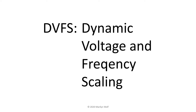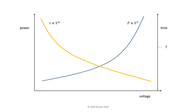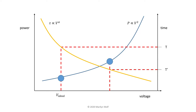This plot shows power and delay as a function of voltage. Delay is the inverse of clock frequency. As we increase the power supply voltage, the delay goes down and the clock frequency goes up, while power consumption goes up. Our task must meet a deadline T. We can find the point on the delay curve that corresponds to T, and then find the power supply voltage that gives us exactly the desired delay — that voltage is known as V-ideal. If we choose to run the task faster, it will consume considerably more power because it operates at a much larger power supply voltage.